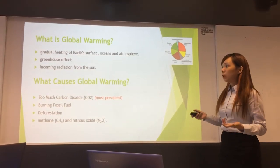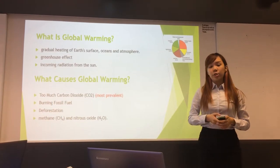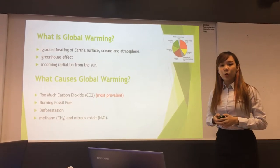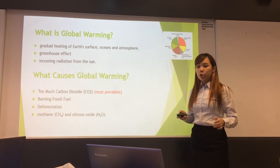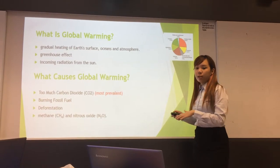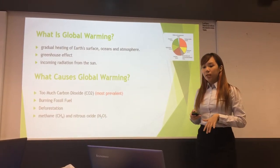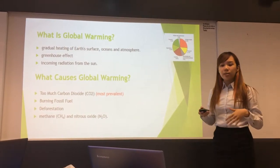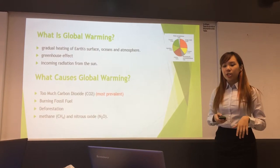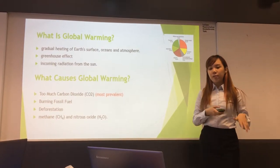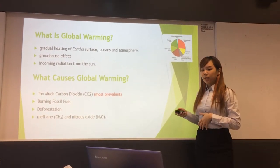So what is global warming? Global warming is a gradual increase in the overall temperature of the earth's atmosphere attributed to the greenhouse effect. Global warming begins with the greenhouse effect, which is caused by the interaction between the earth's atmosphere and the incoming radiation from the sun.